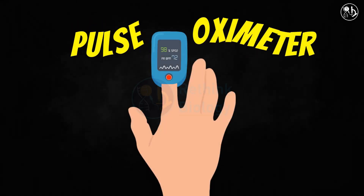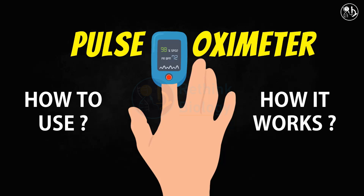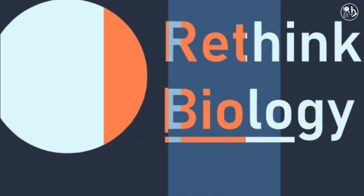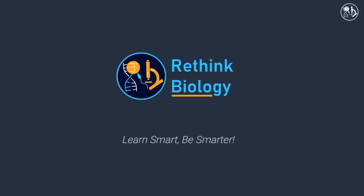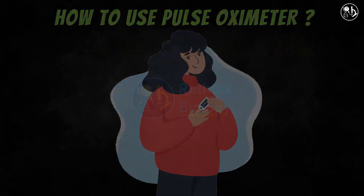Hello everyone, today we are going to learn about pulse oximeter. Watch the video till the end to know how to use a pulse oximeter and how does it work. A pulse oximeter is a device that measures your oxygen saturation level, or the oxygen levels in your blood.